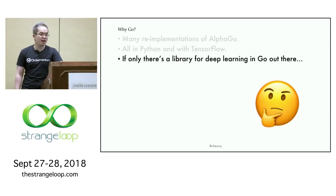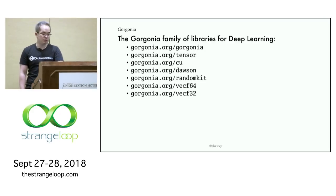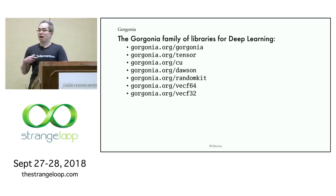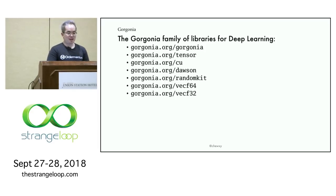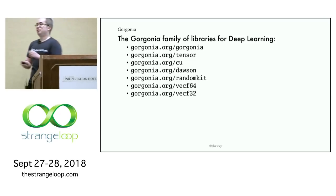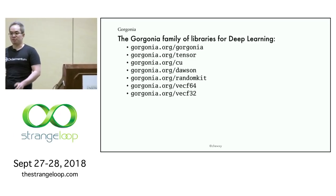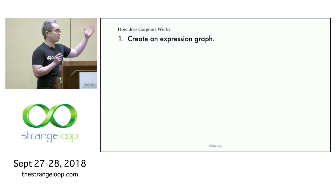To implement AlphaGo in Go, we relied on Gorgonia. Gorgonia is a family of libraries for deep learning in Go. I was actually quite frustrated with TensorFlow back in the day, so I wrote Gorgonia. And about six months after I did that, Google announced and released TensorFlow. Having some FOMO syndrome, I decided to release Gorgonia.